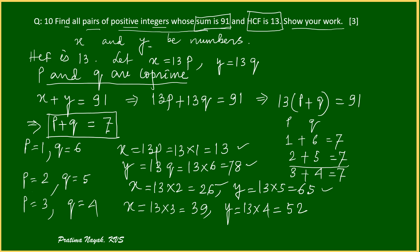So find all pair of numbers. So pairs of numbers are: one is 13, 78. Next is 26, 65, and 39, 52.